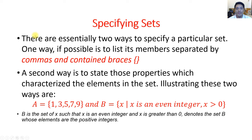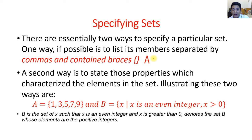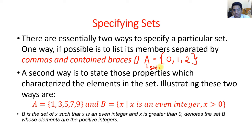There are essentially two ways to specify a particular set. One way, if possible, is to list its members separated by commas and enclosed in braces. For example, we can name a set as capital letter A equal to {0, 1, 2}. The set name is A, the braces enclose the members, and 0, 1, and 2 are called the elements.